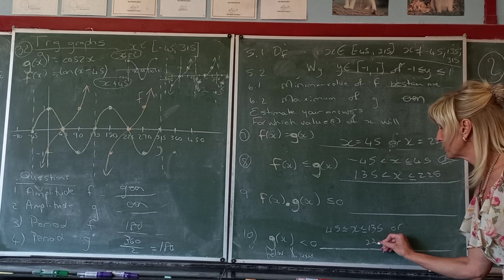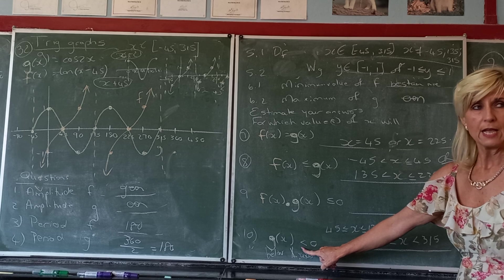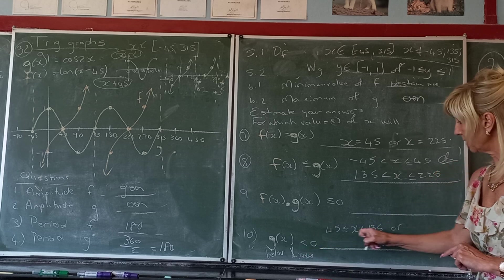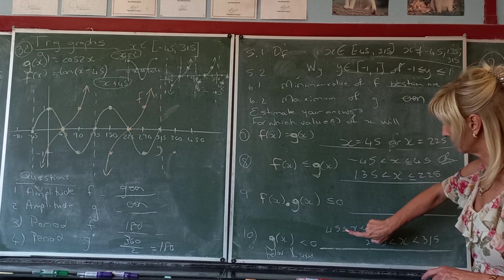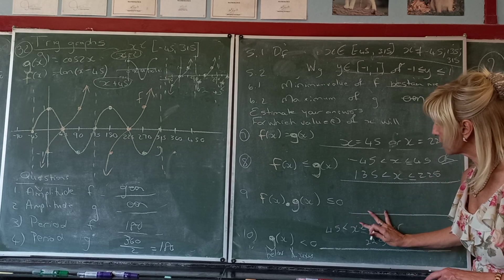It's got nothing to do with the tangent graph which has an asymptote. And the next piece was from 225 up to 315. And again, both of them are excluded because the sum said exclude.